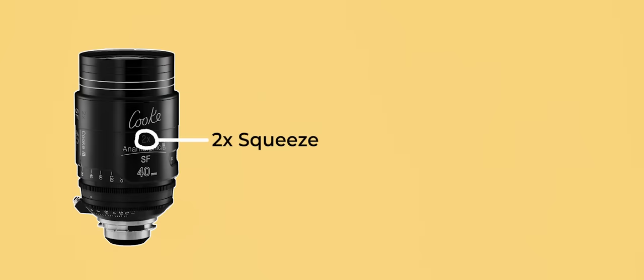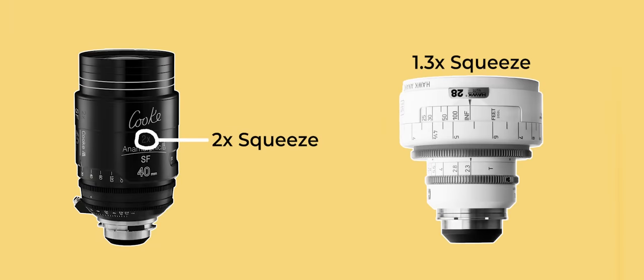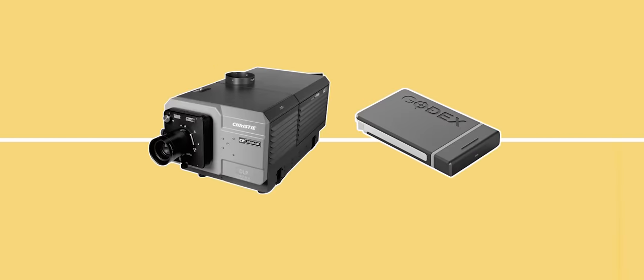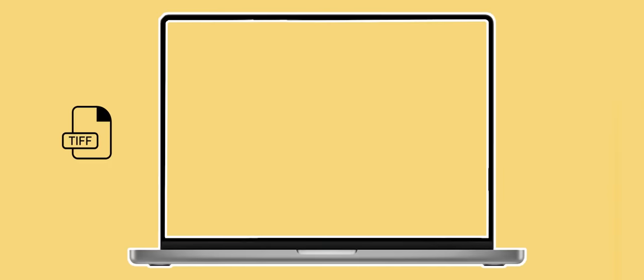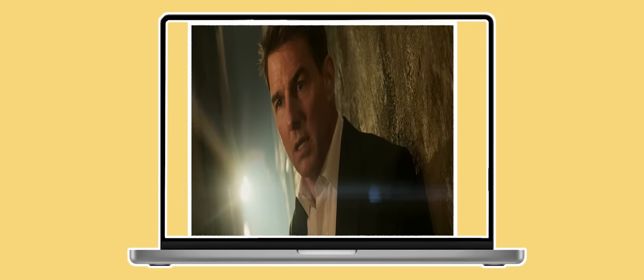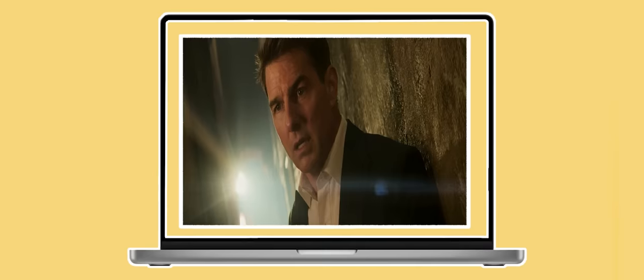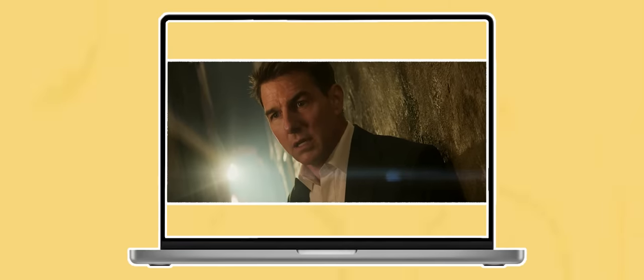Although a 2x factor is the norm for anamorphic glass, there are also some lenses with different squeeze factors out there, which we'll get to a bit later. Now that all post-production and almost all cinema projection happens digitally rather than with film, the method for de-squeezing footage has also changed. You can now import files shot with anamorphic lenses into editing software and apply settings to de-squeeze the footage digitally — for example by a factor of two — to make the images uncompressed in a native widescreen aspect ratio.